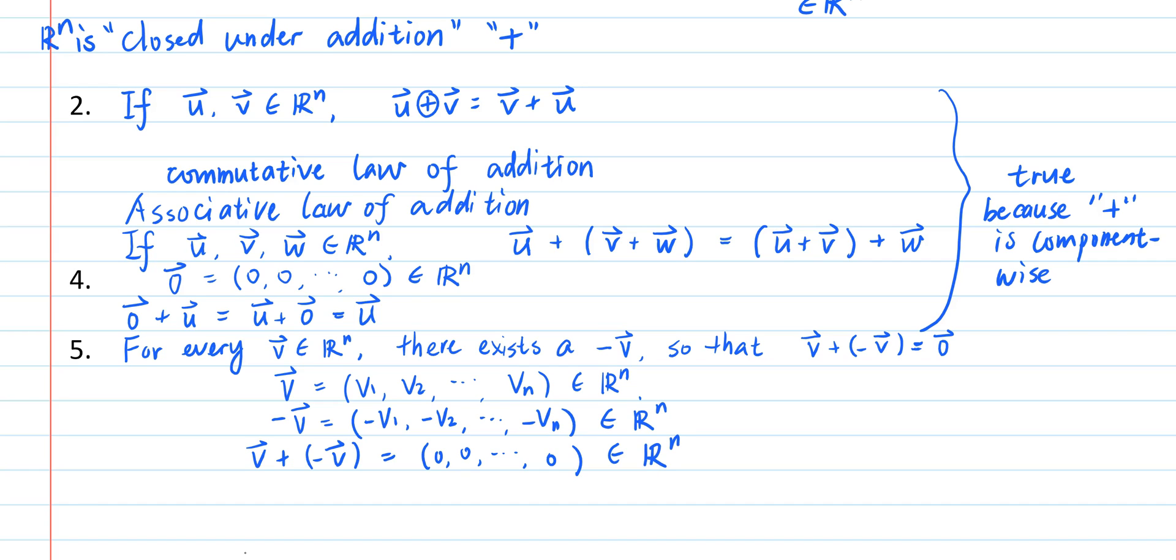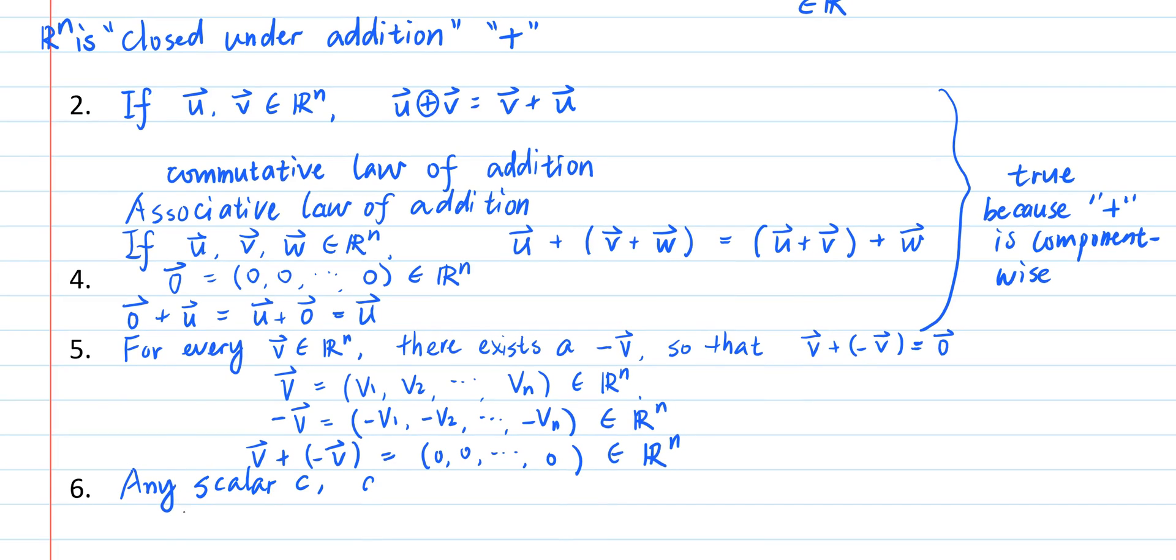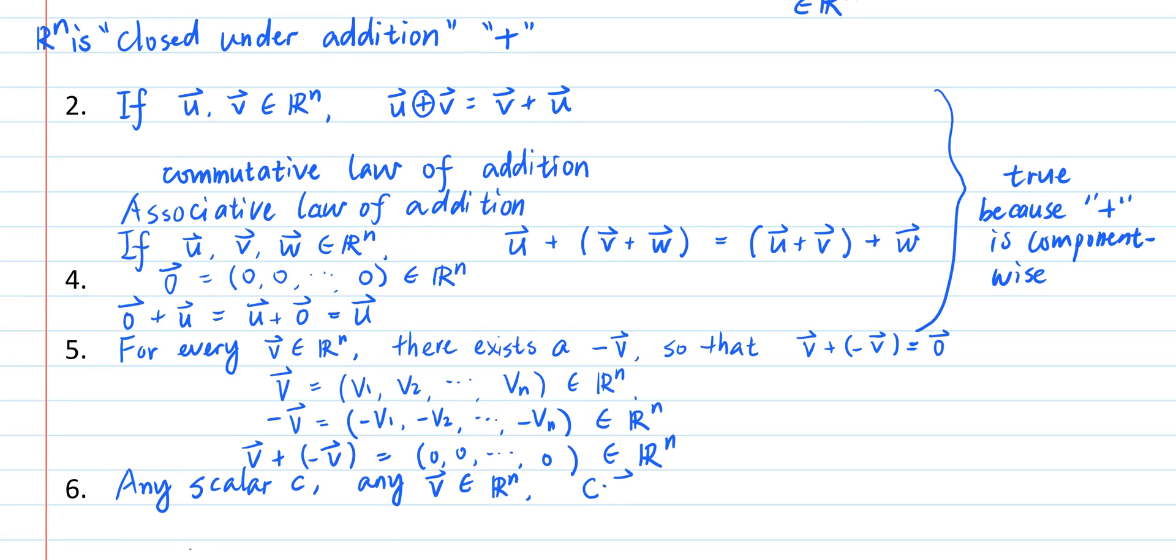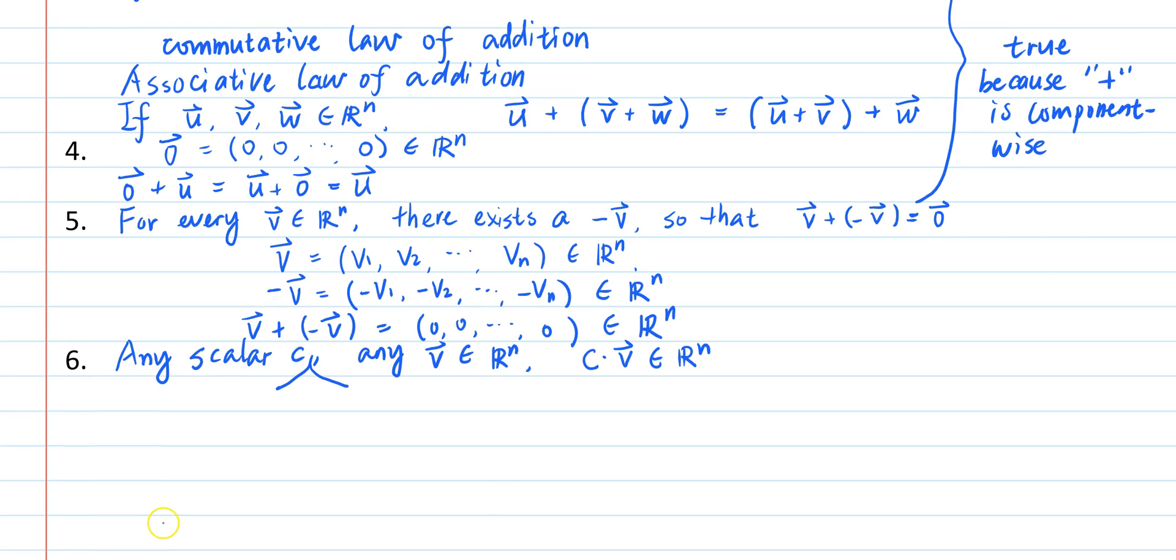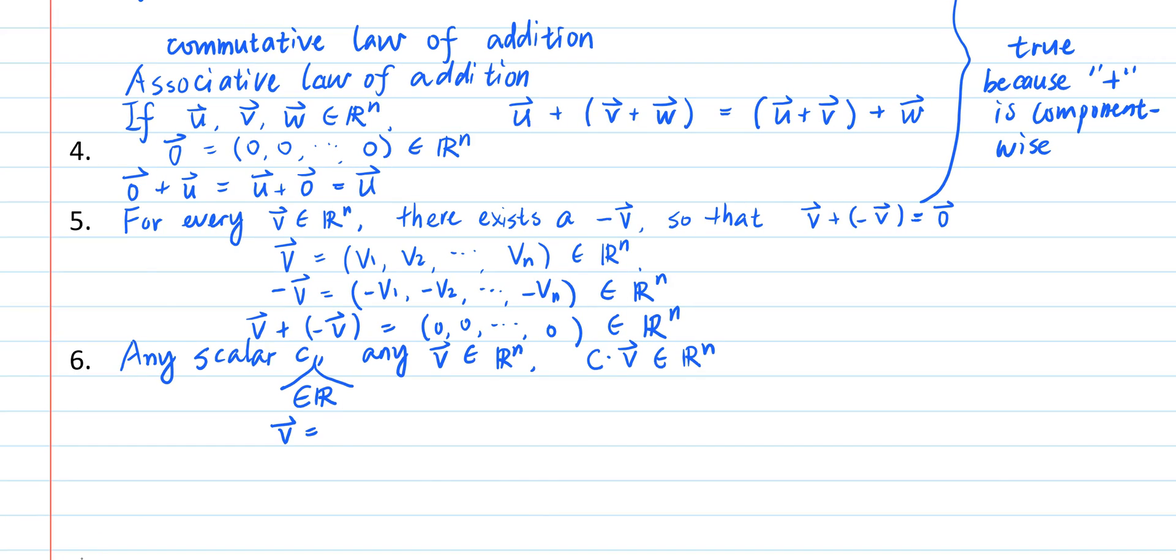The sixth property says that for any scalar c and any element v of R^n, the scalar multiple of c and v is still in R^n. Here by a scalar, we mean a real number.